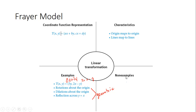Now let's talk about non-examples. The transformation T(x, y) = x² — is that in the format of ax plus by? No. And 3x plus 4 — is that in the format of ax plus by? No, that's in slope-intercept mx plus b form. Translations — left, right, up, down — are just geometric transformations, not linear transformations. And any reflection across anything other than y equals x is also a non-example.